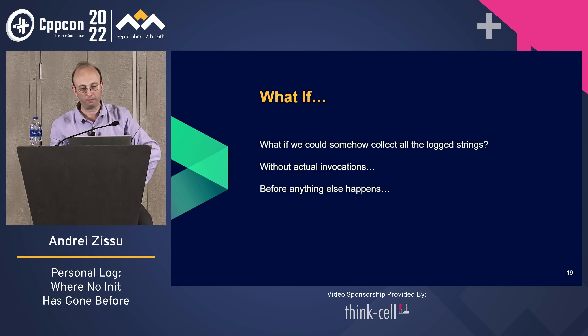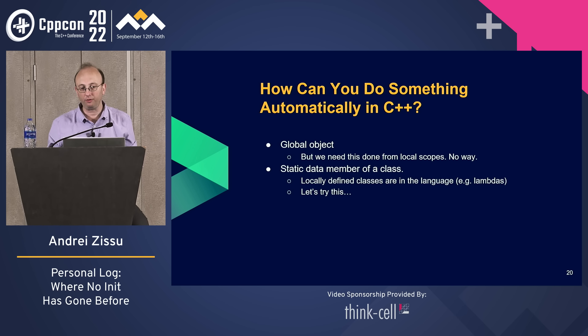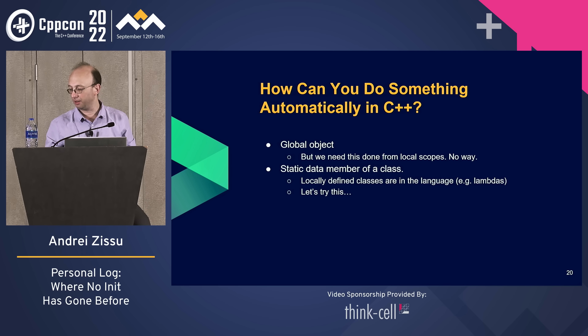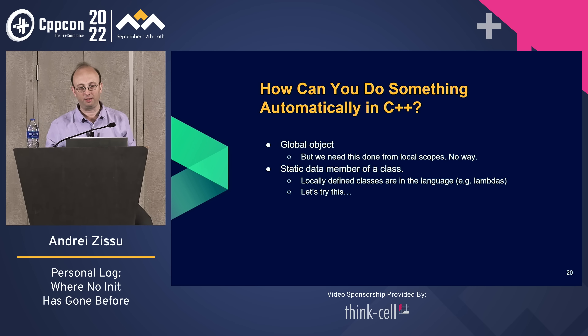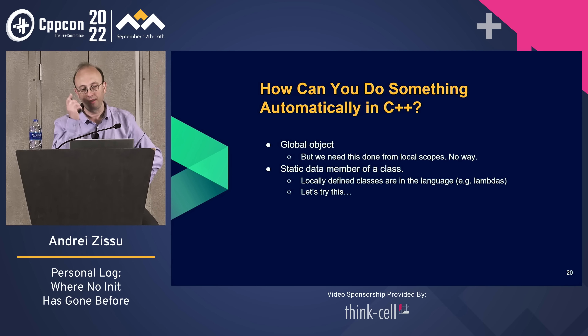To do something automatically in C++, the only way is through some kind of constructor. A constructor of what? The main thing coming to mind is a global object, but that's an immediate no-go because we need to do this from local scopes. The other option is static data members of classes. We do have those in our language — in most cases we call them lambdas, but lambdas are just syntactic sugar, so we can use them in their original form.